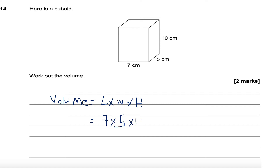Seven times five is thirty-five. Thirty-five times ten is three hundred and fifty. The units in this case are centimetres cubed. So three hundred and fifty centimetres cubed. We do not actually cube our answers — the units are just units to the power of three. So that is our final answer.